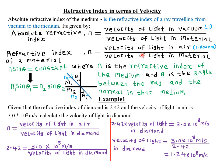Therefore, in calculations, the formula you will be encountering in most cases is: the refractive index of a material n, in terms of velocities, is always given by velocity of light in air divided by velocity of light in that particular material — whether that material is glass, water, or any other medium.